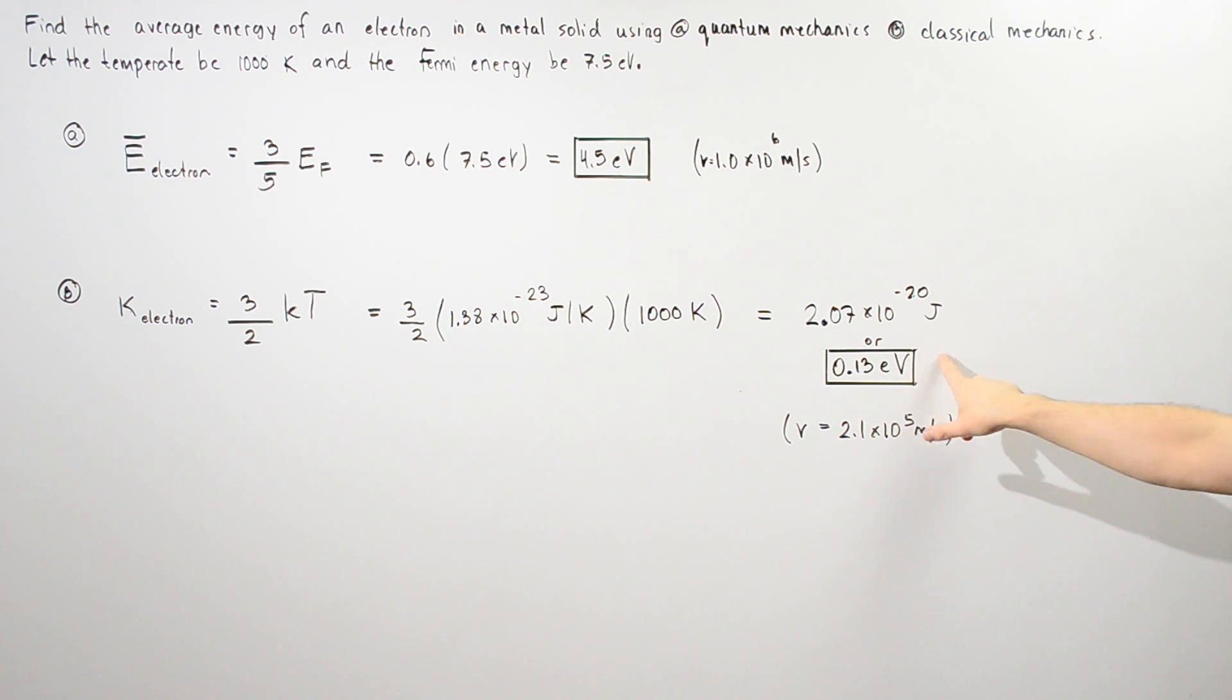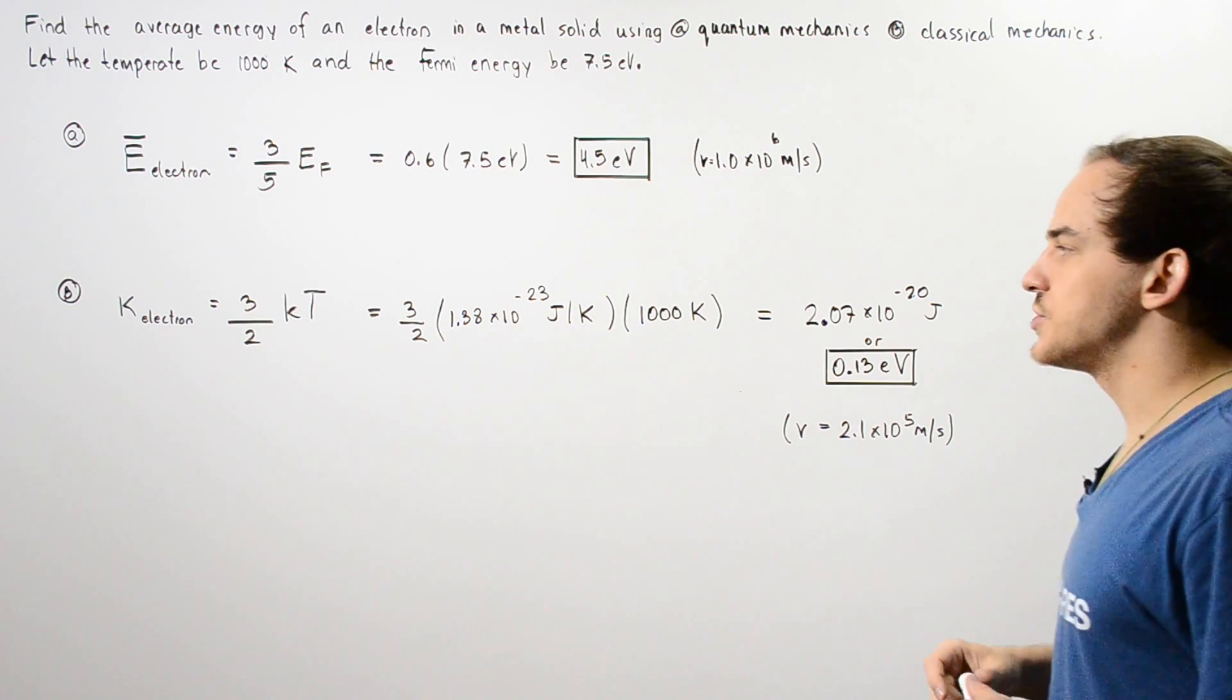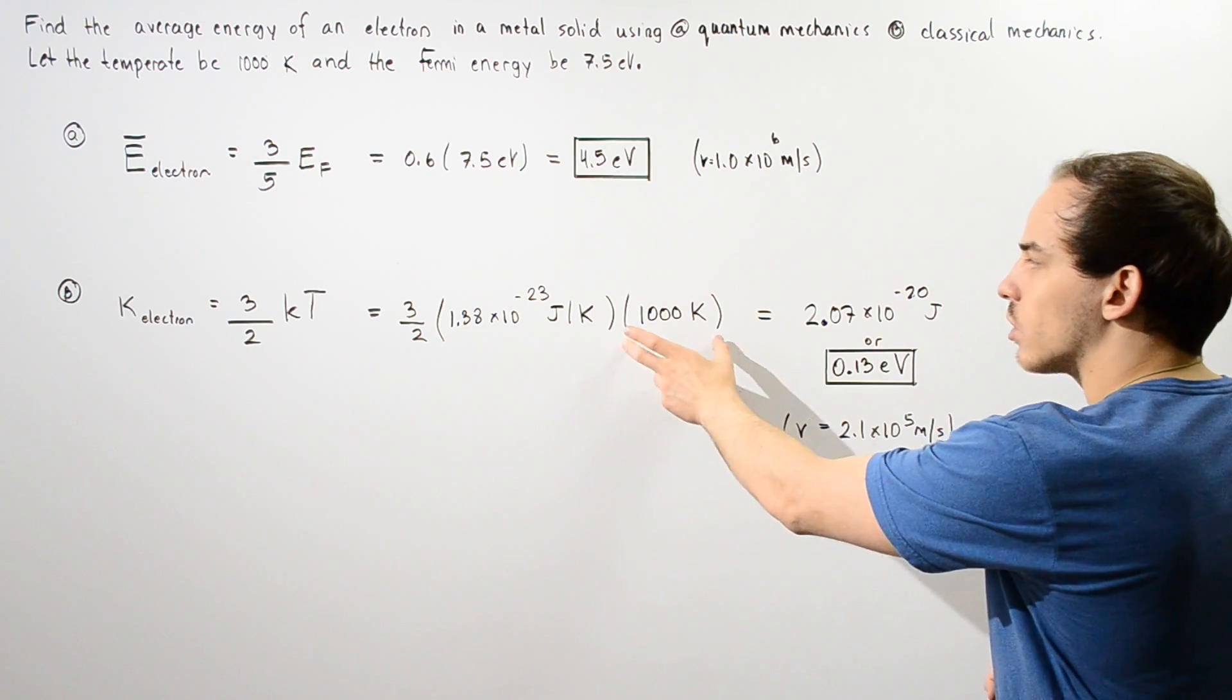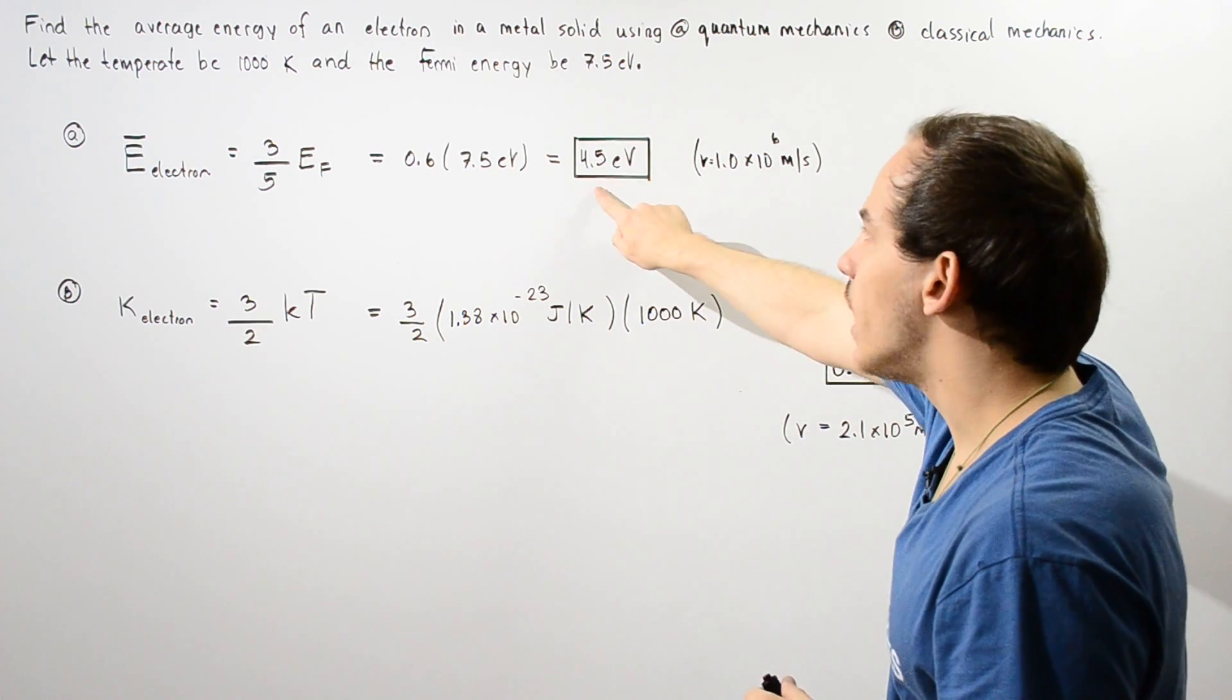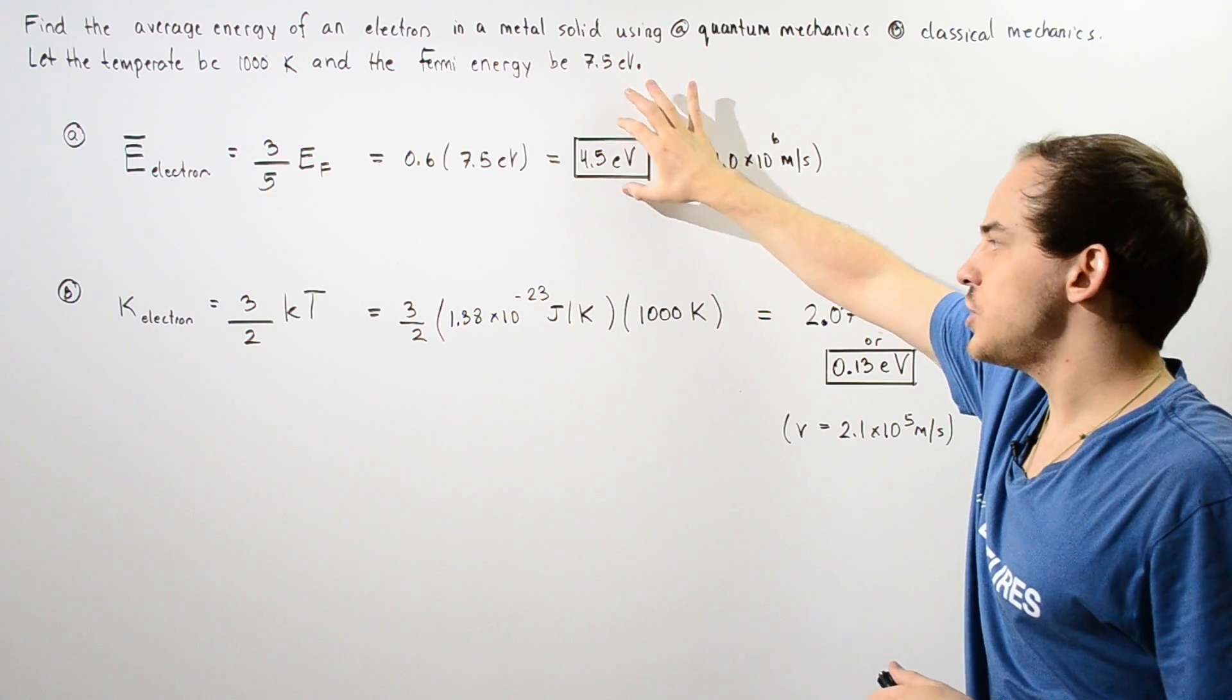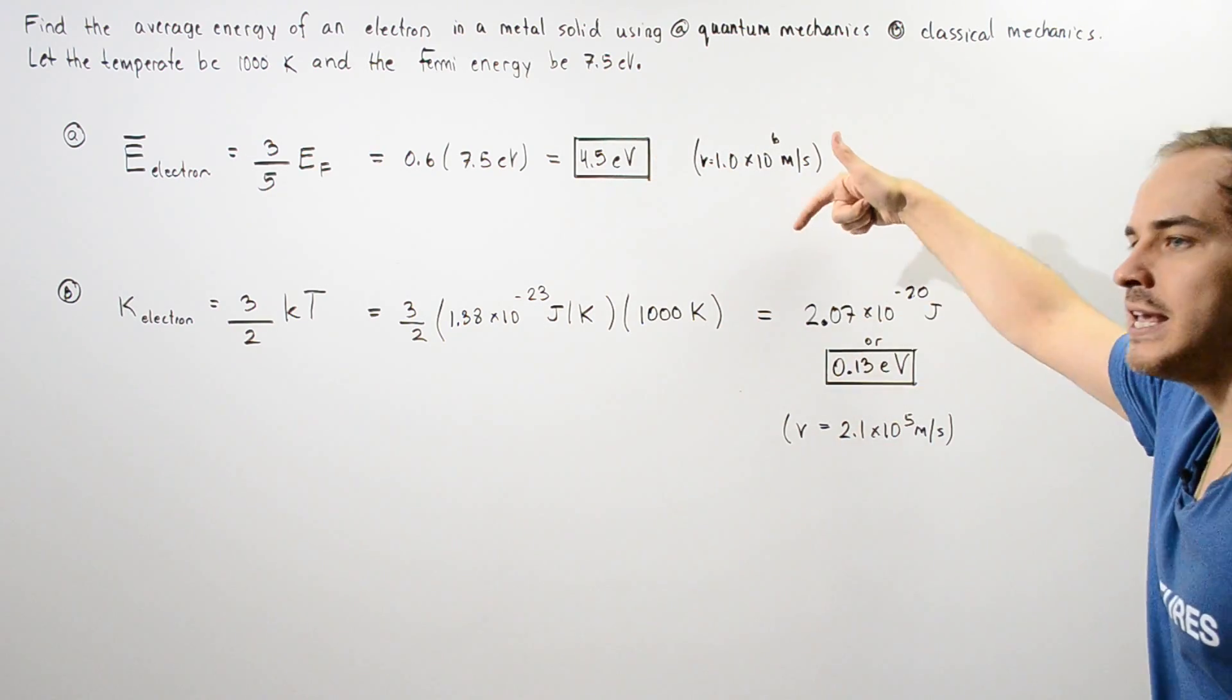If we calculate the velocity, this gives us only about 2.1×10^5 meters per second. And if our temperature decreases, we see that this quantum value doesn't actually change, but the classical value becomes even less.